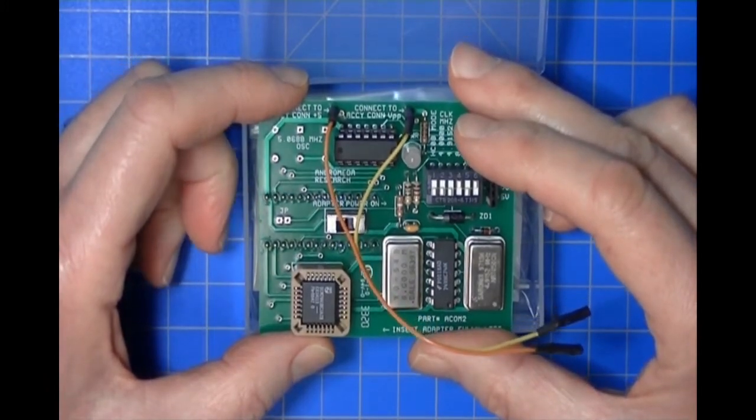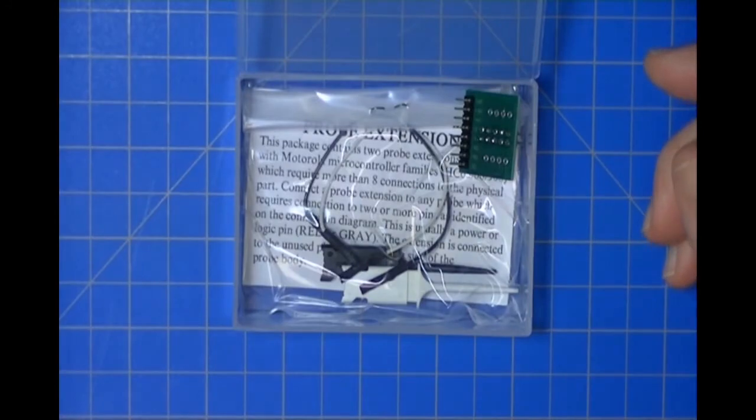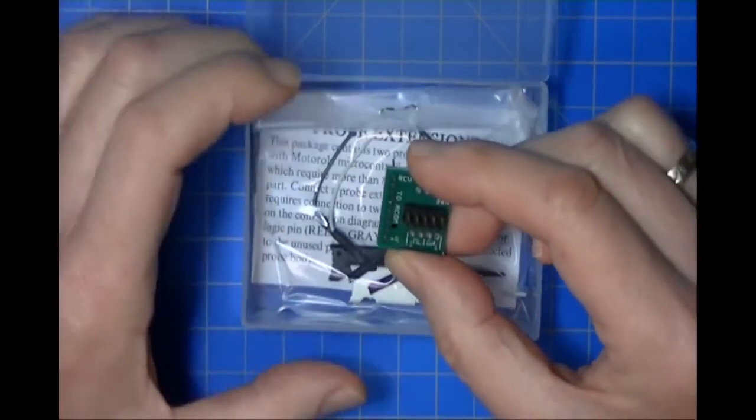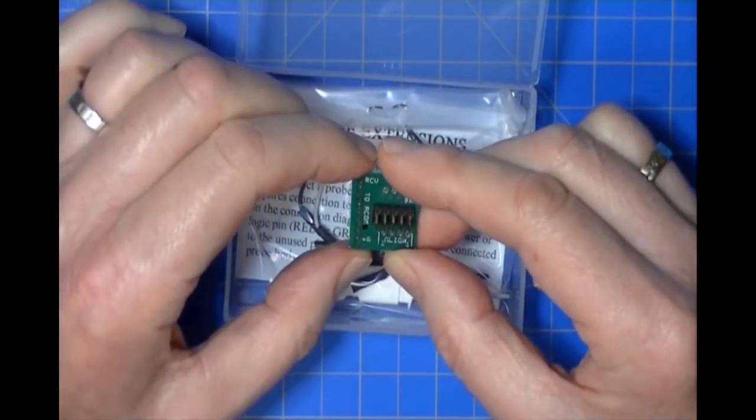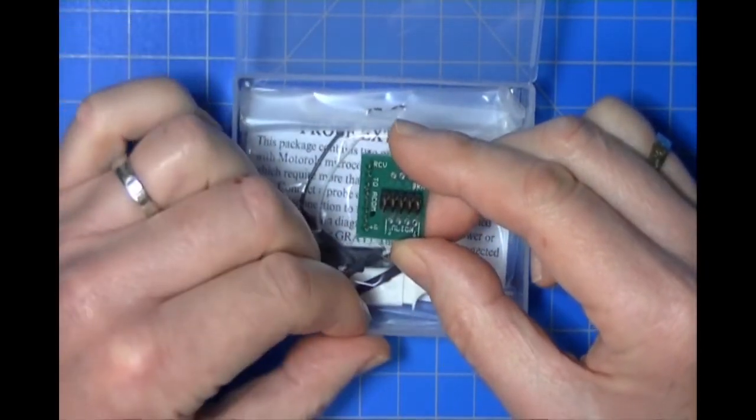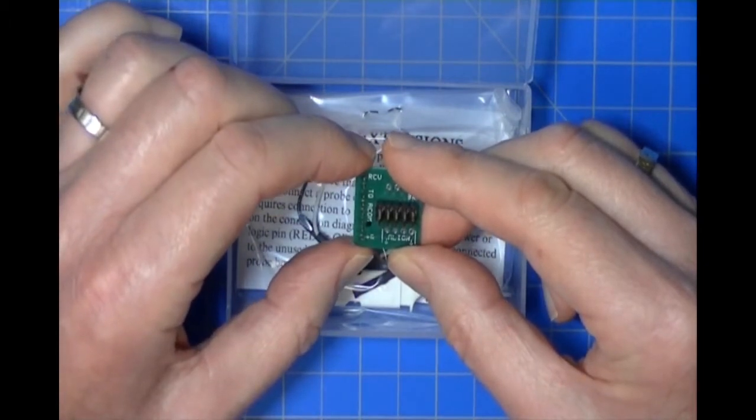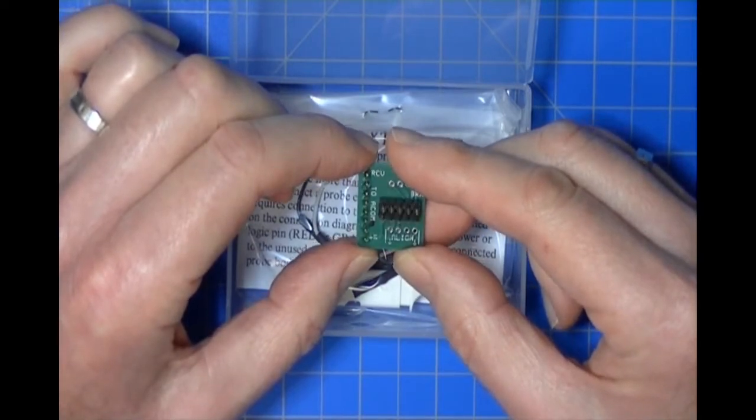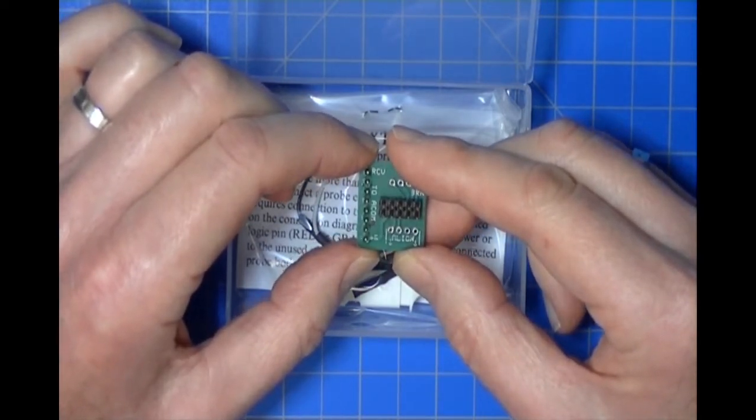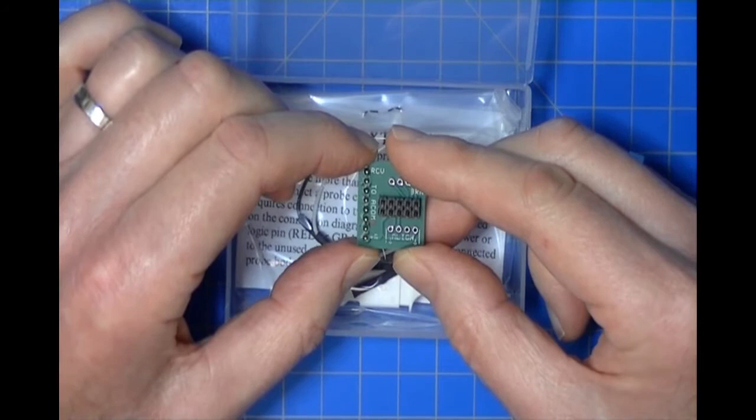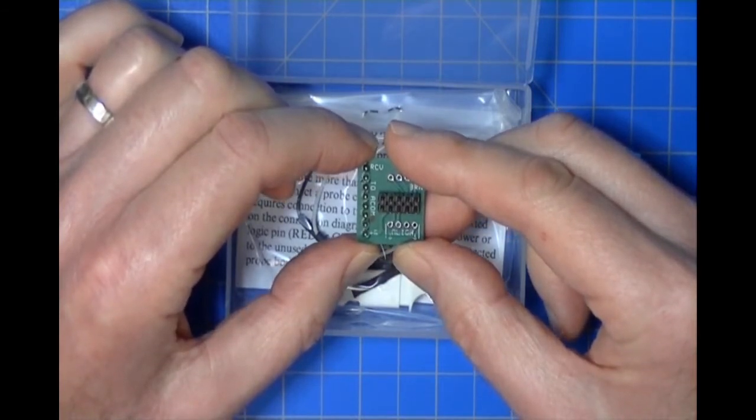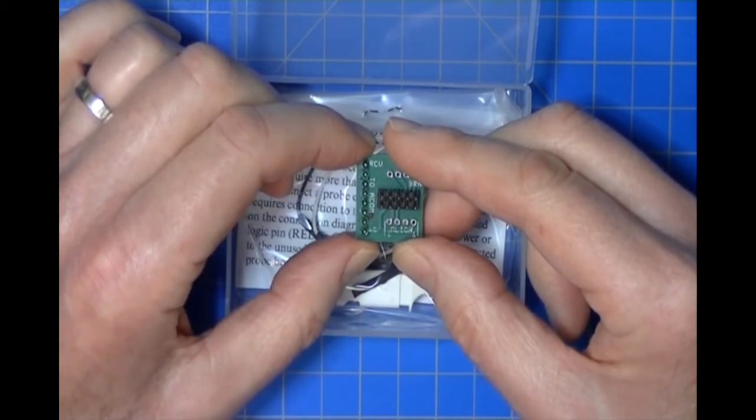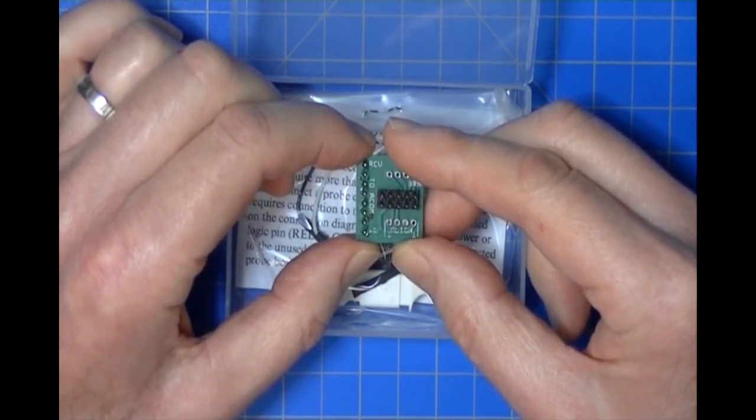The other thing on the box is this connection terminator, which allows you to attach the probes, which is how the ACOM 2 attaches to the microcontroller. This is a little transition board which allows you to hook the probes into the precision probe set or the standard probe set, or you can wire your own with one of our cables.